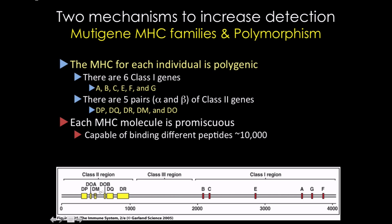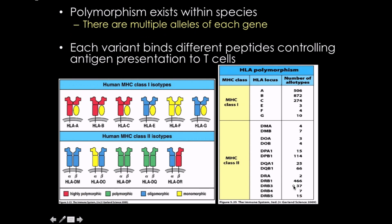This diagram shows the gene arrangements for the class 2 region. This is all on chromosome 6. There is the class 2 region, the class 3 region — which we're not really talking about — and then the class 1 region, which is associated with the MHC receptors.